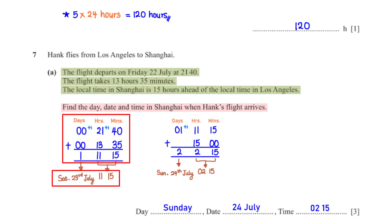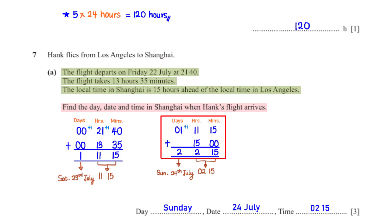This is the local time in Los Angeles, so we need to add an additional 15 hours to get the equivalent local time in Shanghai. 15 plus 0 is 15 minutes. Under the hour column, 11 plus 15 is 26; 24 hours is one day, so we add one to the day column and leave 2 hours. Under the day column, 1 plus 1 is 2. Our result means the local time in Shanghai is one day ahead. And so the date and time in Shanghai is Sunday, 24th July, 02:15.